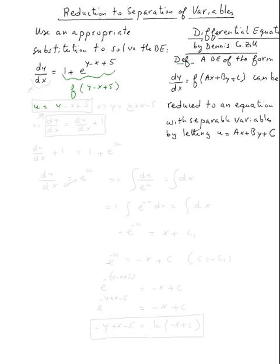Let's use u equal y minus x plus five. If we do that, we know the right side will be one plus e to the u. Now remember, the equation should have only the u and the du dx. So we need to replace dy dx.